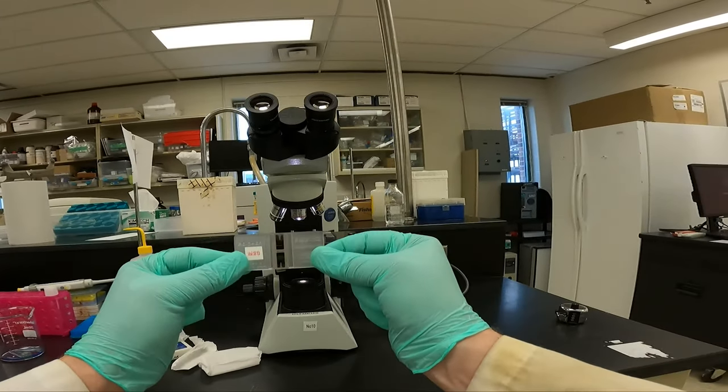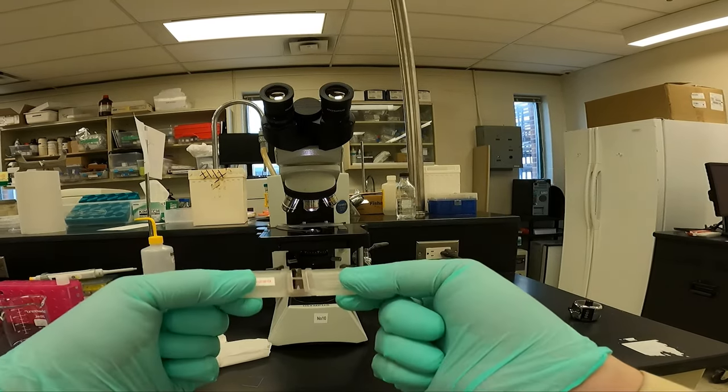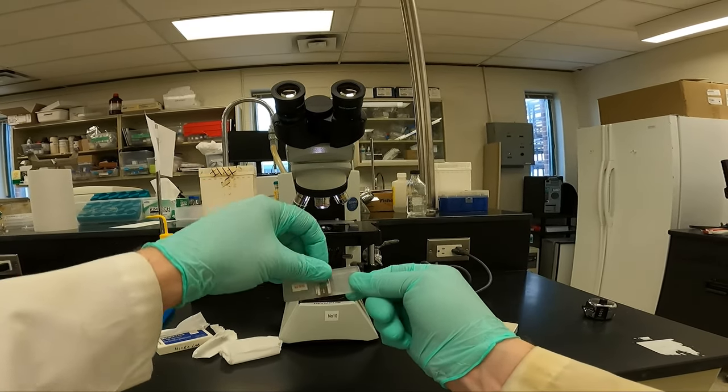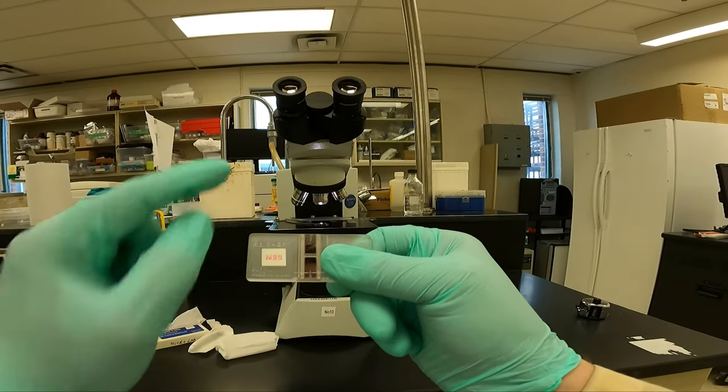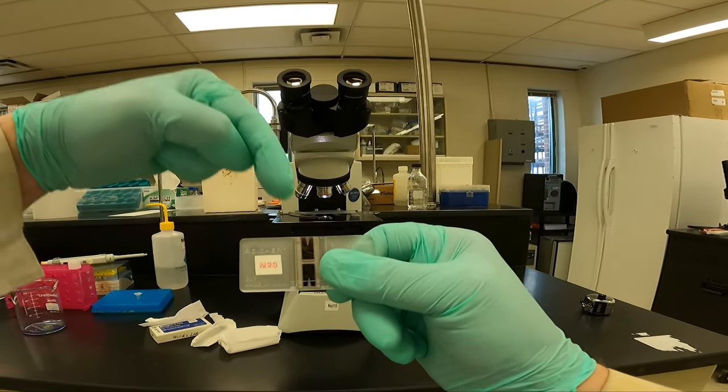And here's a hemocytometer. It is very expensive. There are two sides to it. Put the coverslip on in portrait view and we load it with the two Vs right there. Load there and load there.